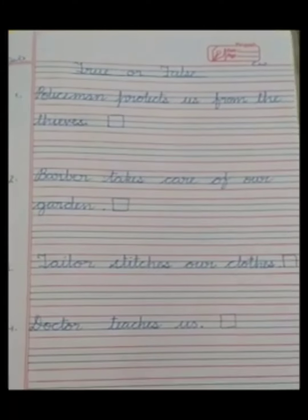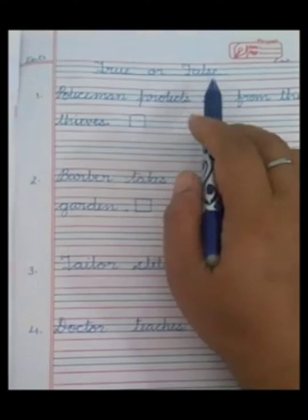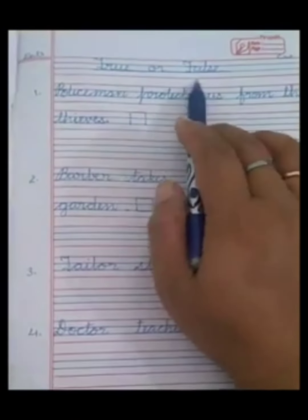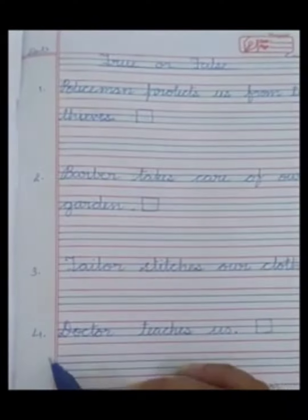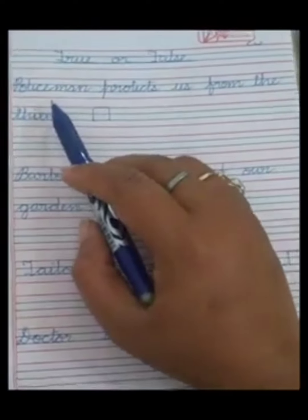Children, now we are going to do the next exercise which is true or false. Write CW and write the heading true or false, and number the margin one to four and write the date. So the first sentence is number one: